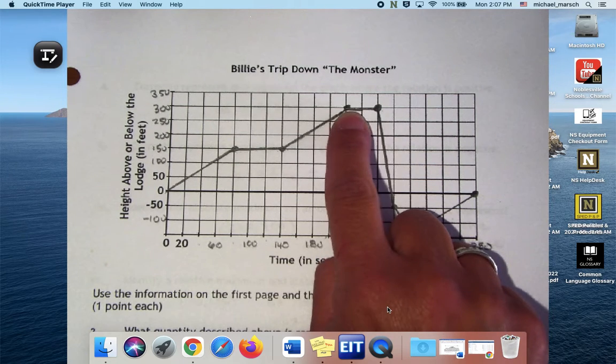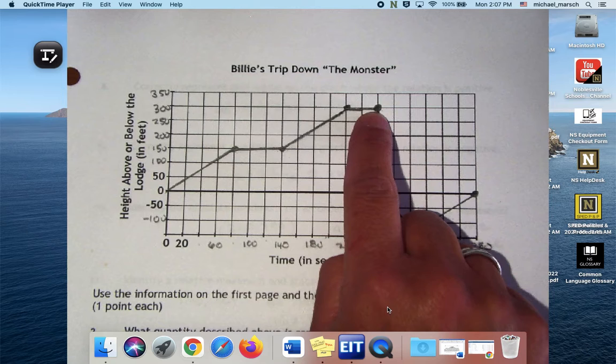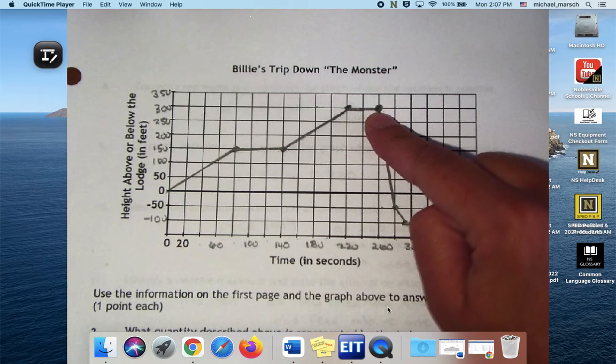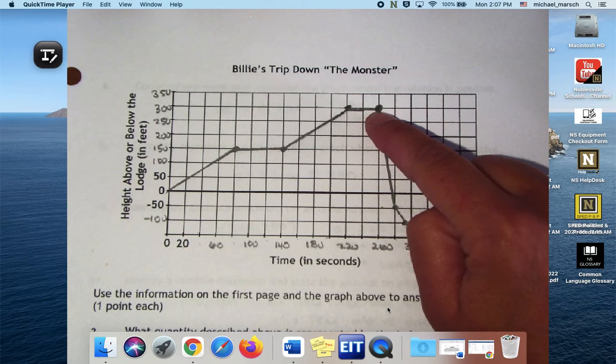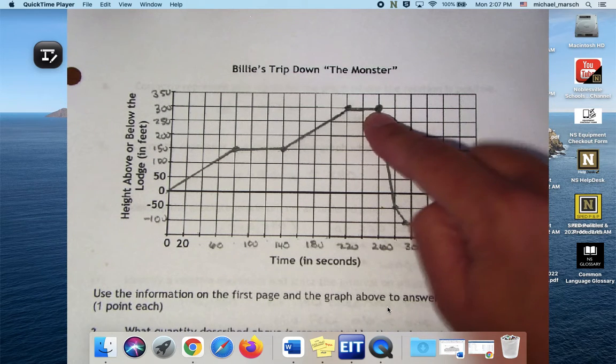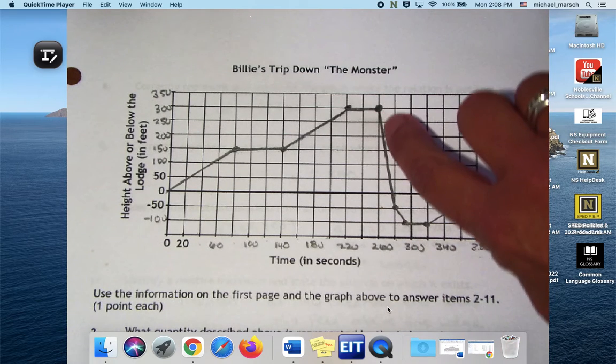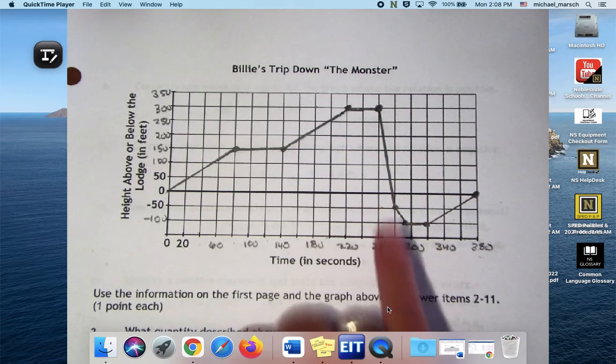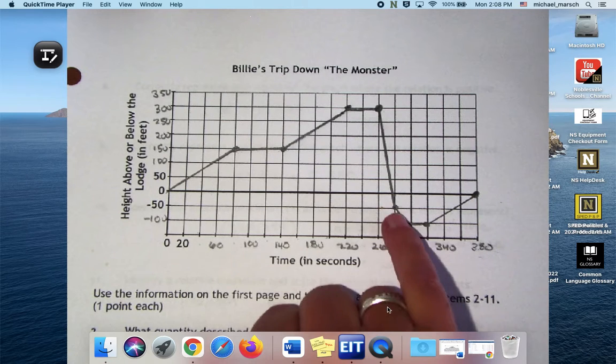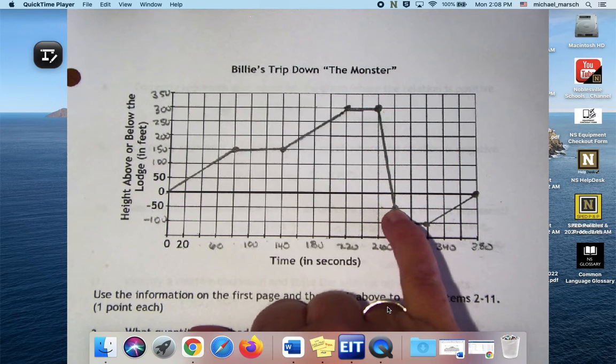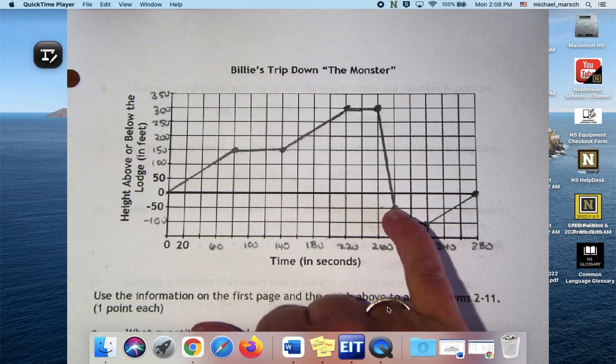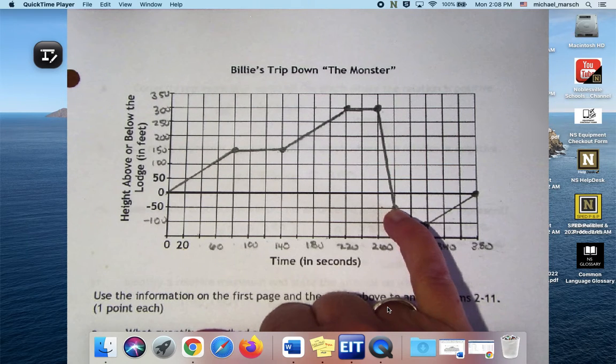It took her 40 seconds to get to the edge before she's going to go down the ski hill. It took her 20 seconds to finish at a height 50 feet below the lodge, so in this next 20 seconds she's down here now at negative 150. How are we doing so far?